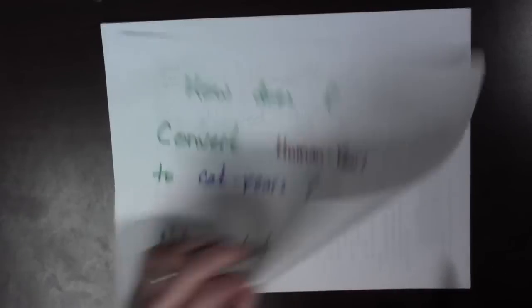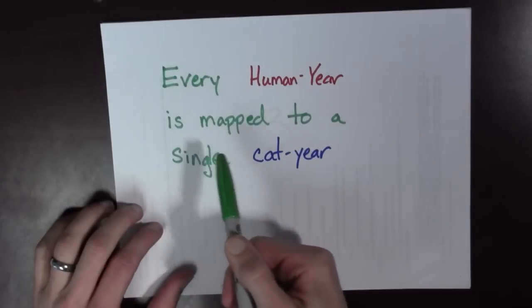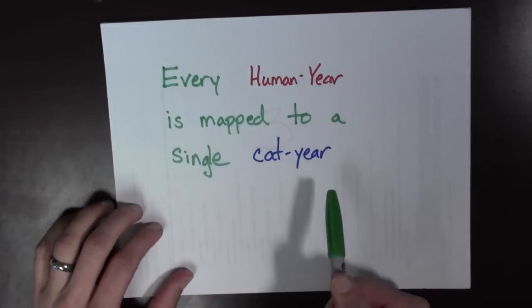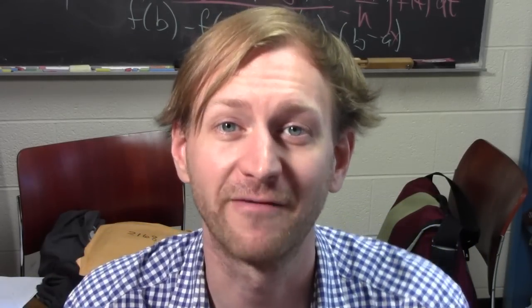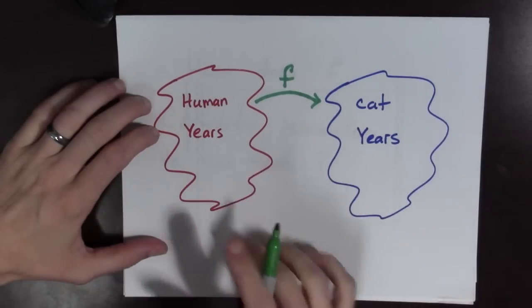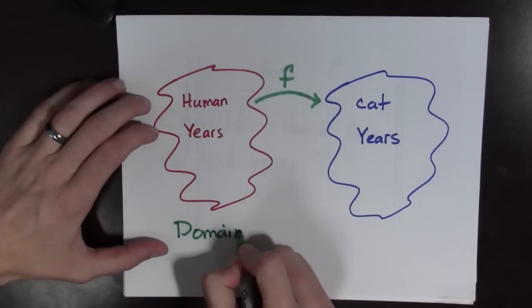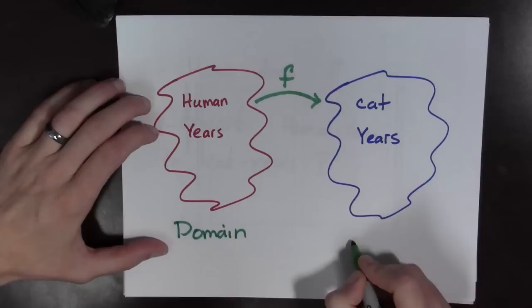The important issue is that for every human year, it gets mapped to a single cat year. So, this is one key point about functions. Functions have inputs, and they have outputs. The inputs are called the domain, and the outputs are called the range.